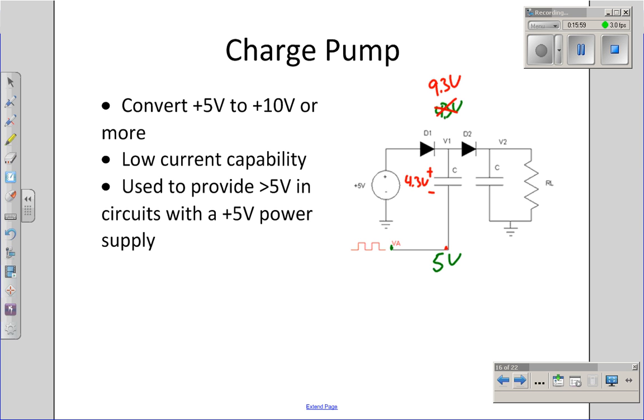When it jumps up to 9.3 volts, diode 2 turns on, and I charge up the output to 9.3 volts minus 0.7 volts across the diode, 8.6 volts. I then take my input VA, bringing it back down to 0 volts. Diode 2 turns off, diode 1 turns on, and I put more charge back on the plates.